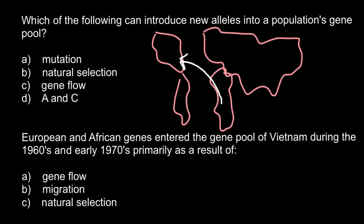Now we are ready to choose the correct answer. Answer A — mutation — can introduce new alleles in the gene pool. That's correct. Answer B — natural selection — cannot introduce new alleles; it can only influence frequencies. Answer C — gene flow — can also introduce new alleles into a population. That means the correct answer would be D — none of the above, since both A and C are correct.